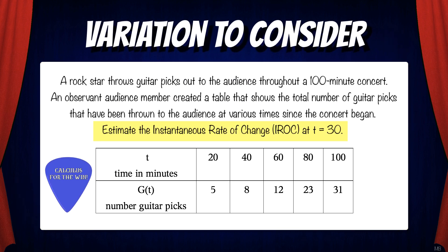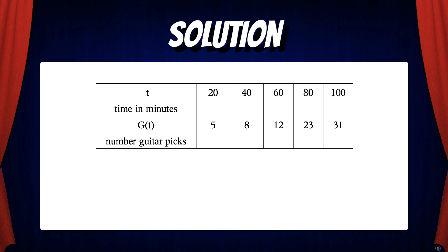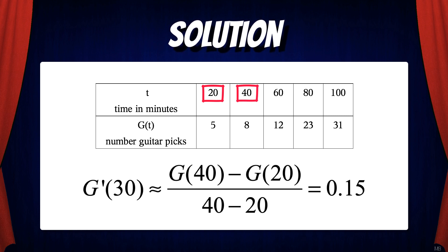Let's look at a variation on this problem. Suppose you need to estimate the instantaneous rate of change at t equals 30. Note that t equals 30 is not part of the data, so what are we going to do? We're going to use the best average rate of change that we can get from the data to approximate the IROC at t equals 30. In this case, we're going to use values of g of t at t equals 20 and t equals 40. So we can say that g prime of 30 is approximately equal to g of 40 minus g of 20 over 40 minus 20, or 0.15.